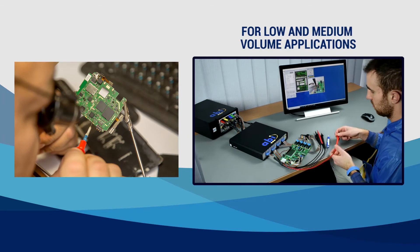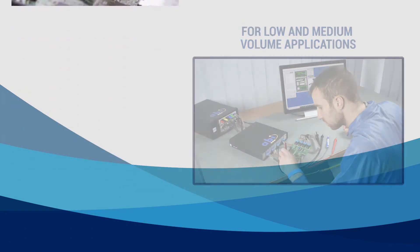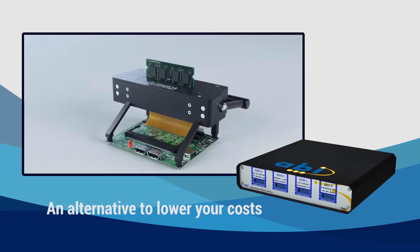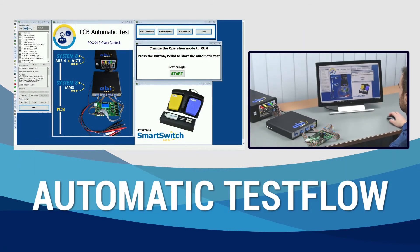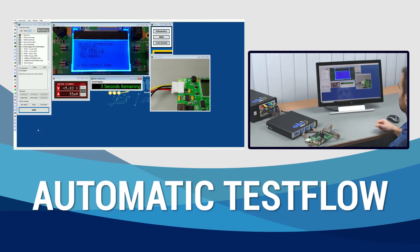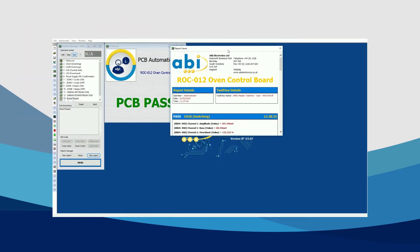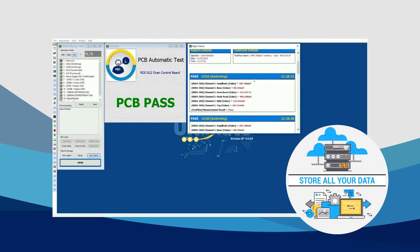With ABI's multiplexed matrix switch and the company's user-friendly systemate ultimate software, you can easily and cost-effectively automate existing low and medium volume test routines and applications. Start the test flow in the exclusive run mode, sit back and watch measurements being acquired, compared and results logged automatically, in a matter of seconds. Review the comprehensive test results at the end, or simply have the software store it safely in a designated location on your server or computer.